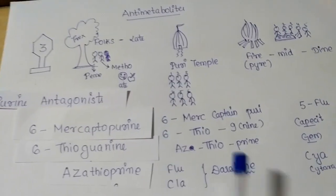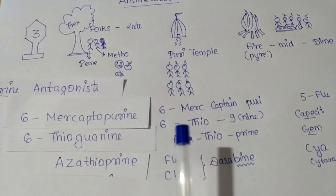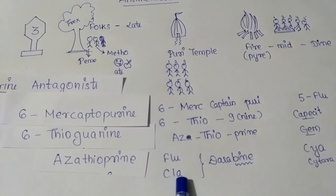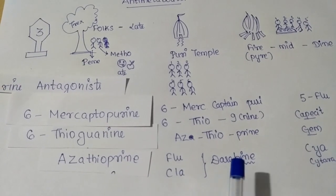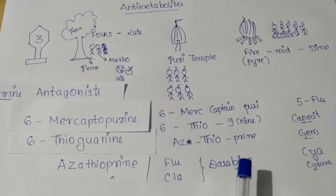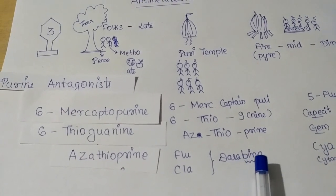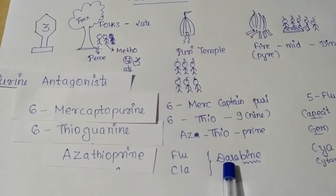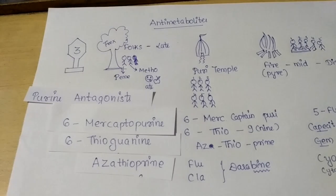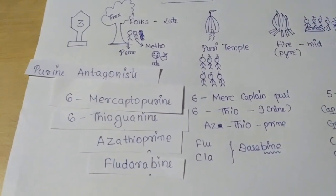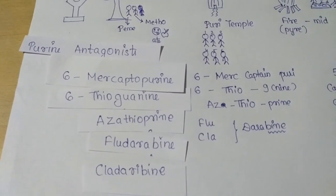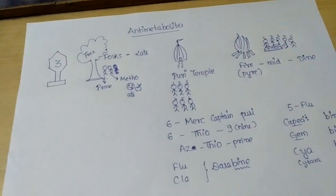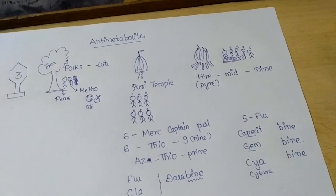Next there are two sisters who are suffering from flu and cold. They were advised to take wine, but they pronounce it as 'bine,' and their common middle name is 'dra.' So the drugs are fludarabine and cladrabine. These are the purine antagonists.